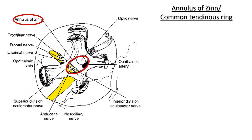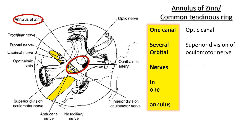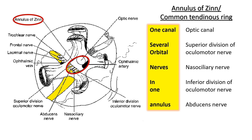The annulus of Zinn, or common tendinous ring, is a ring of fibrous tissue at the apex of the orbit. Structures passing through it can be memorized as 'one canal, several orbital nerves in one annulus': optic canal, superior division of the oculomotor nerve, nasociliary nerve, inferior division of the oculomotor nerve, and abducens nerve.